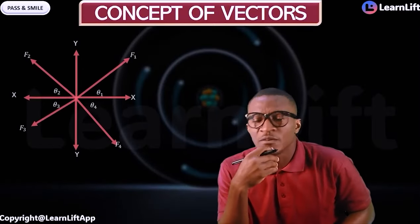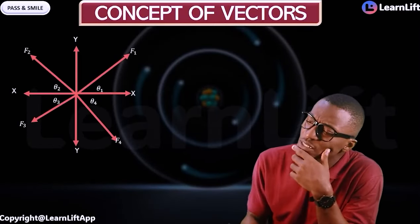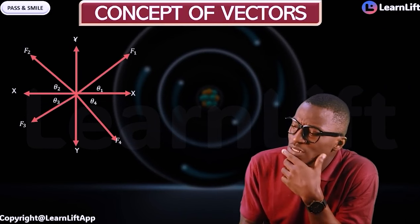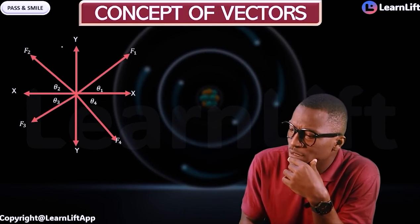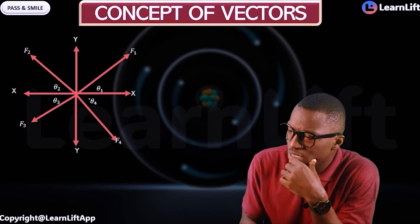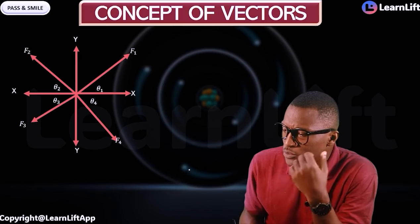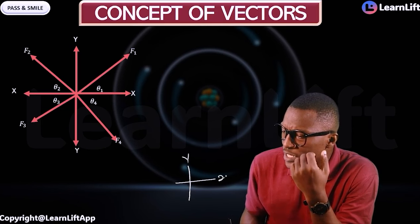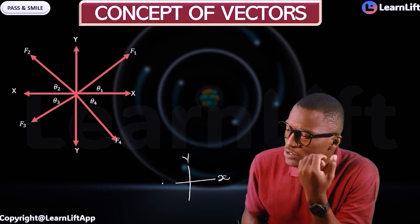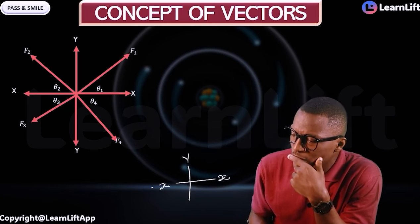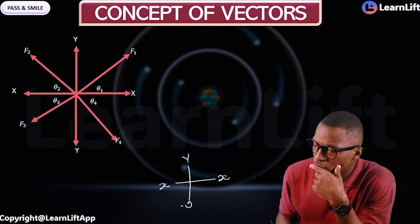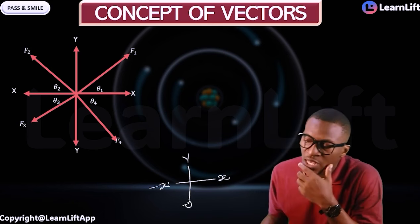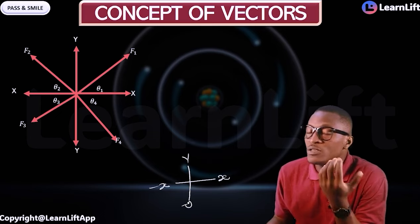Let's say for example we're given this diagram. First, we have the x and y plane. The bottom part is the negative y, this is the x, and this will be the positive y, forming the standard quadrant system.